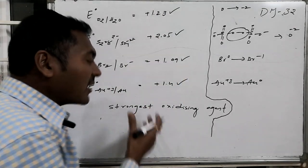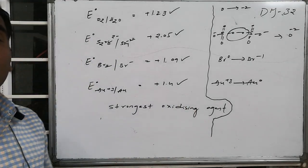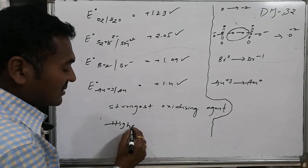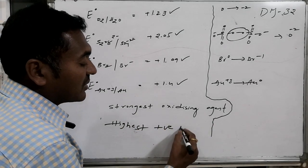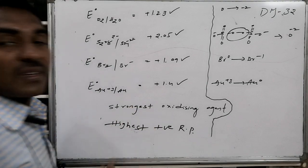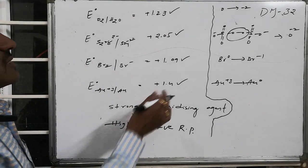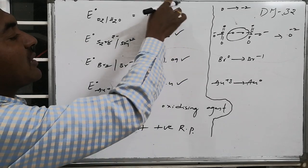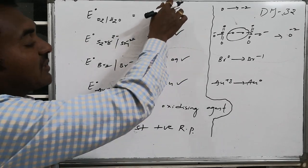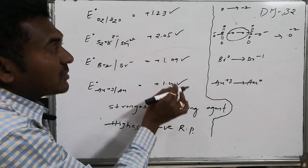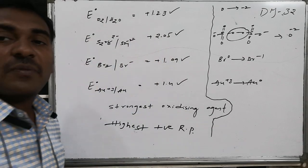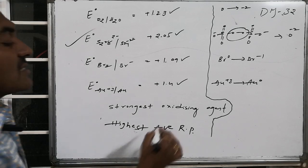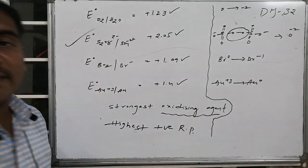Therefore, to behave as the strongest oxidizing agent, it should maintain the highest positive reduction potential. The compound with the highest positive reduction potential: comparing 1.4, 1.09, 1.23, 1.4, and 2.05 volts—plus 2.05 is the highest. Therefore, S2O8 2 minus is acting as the strongest oxidizing agent.